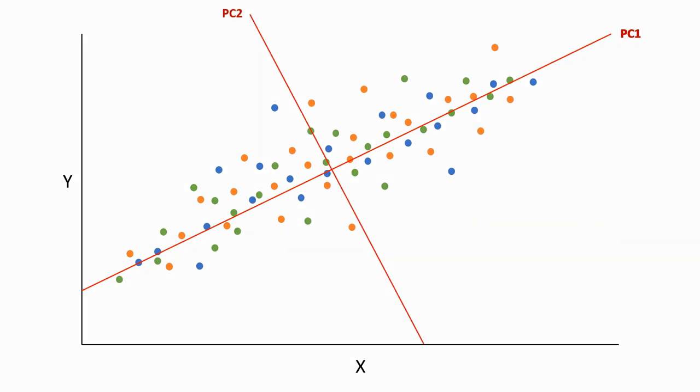We can draw another line that intersects and accounts for the second most variation in our points. Notice that the axis is offset perpendicular from PC1. We can call this PC2. Similarly, we can draw a bunch more axes of variation across our plot, but notice that PC1 and PC2 explain the most variation in our data. Since PCAs are trying to simplify and generalize our data, we are often most interested in PC1 and PC2.